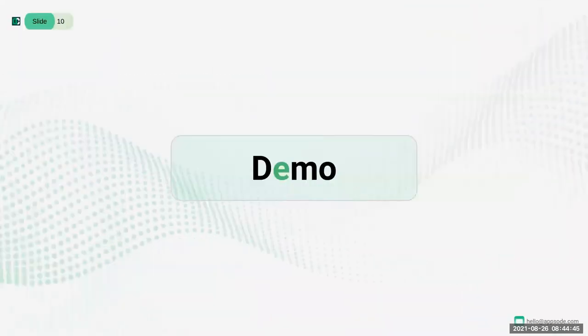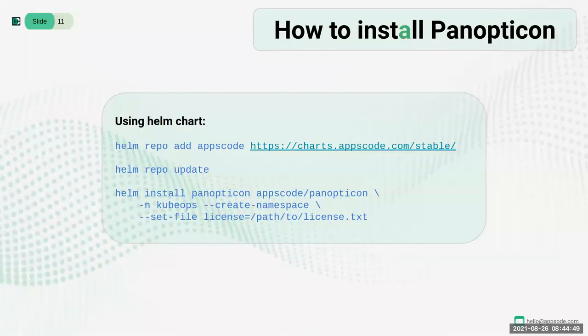Let's jump into the demo. Before the demo, I'll show you how to install Panopticon using our Helm chart. You have to first add our AppsCode repository, then update it. Then you can install using the 'helm install panopticon' command, setting the license file path using the '--set license' flag. Now let's jump into the demo part. I'm using a Linux Kubernetes cluster for the demo.